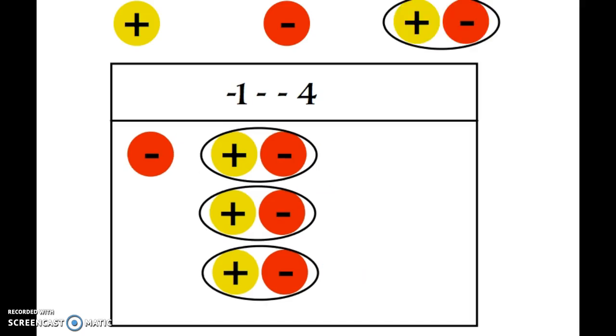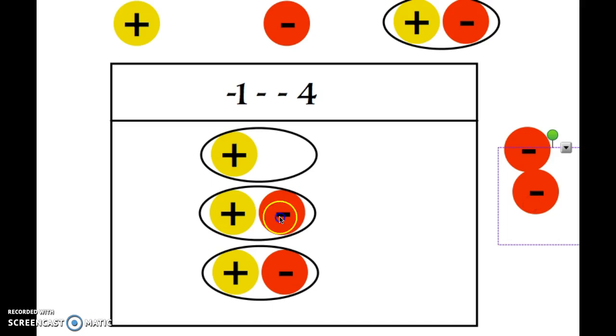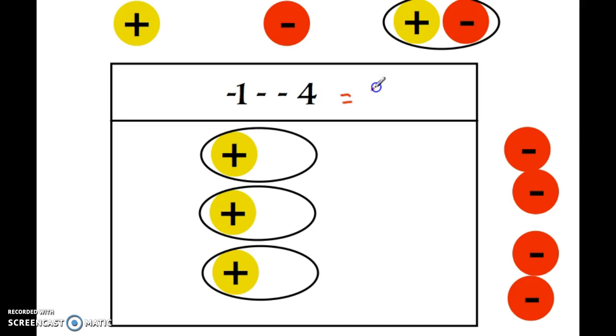And now I have to take away four negatives. So I'm going to go 1, 2, 3, 4. And notice all that I have left on the board is three positives. So negative 1 minus negative 4 is positive 3.